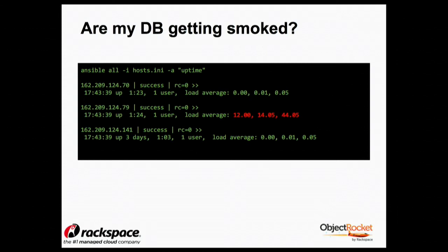Another thing you can do: let's say you get a call in the middle of the night — something's slow. If you have more than one database, which one is slow? You probably just get some app user saying it's slow. One cool thing you can do is run uptime across all servers and see which one is having a problem — that helps narrow down which one to log into. In this case, .79 has a higher load average. When there are 30 or 90 servers, this gets really interesting. Use command line tools like grep or sed on top of this to further parse results. Ansible has tools like Ansible Tower, but mostly I just put results in text files and parse those separately.